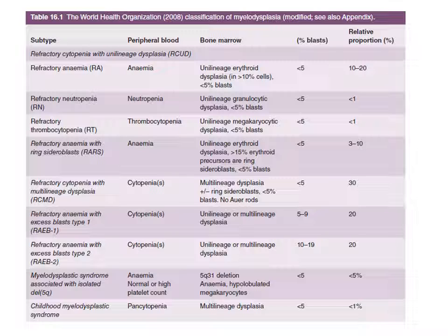Refractory thrombocytopenia: in peripheral blood, we will see thrombocytopenia — low platelet count. In bone marrow, we will see unilineage megakaryocytic dysplasia — only megakaryocytes are involved and they are abnormal — and the blast count in the bone marrow is still less than 5 percent. This is not so common — less than 1 percent of patients may belong to this category.